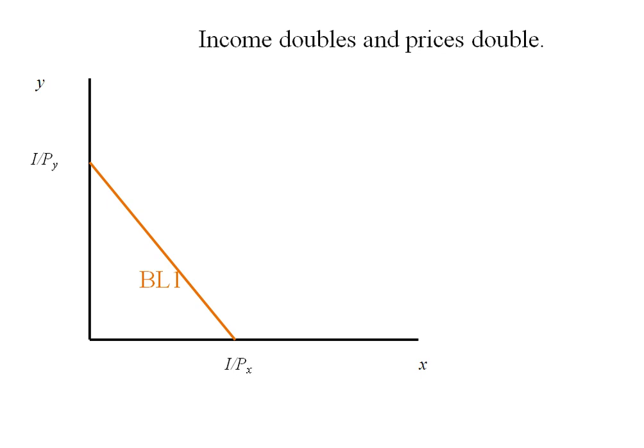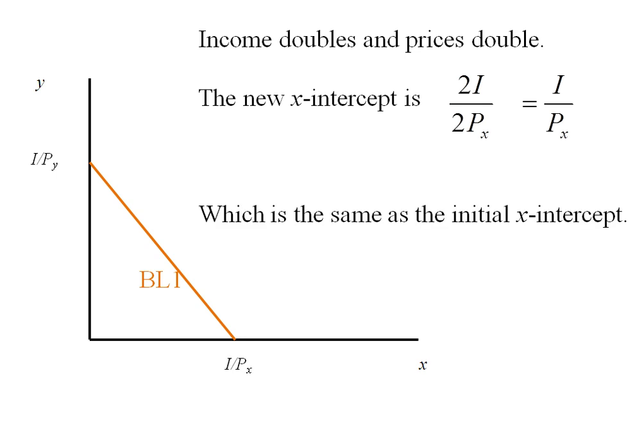Now we're going to double our income and double our prices. So our new X-intercept is going to be 2 times income divided by 2 times the price of X. Well those 2's are going to cancel, giving me I divided by PX, which is the same as my initial X-intercept.